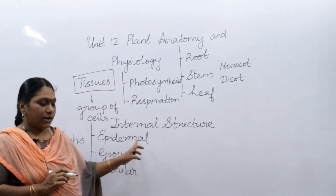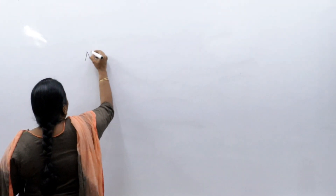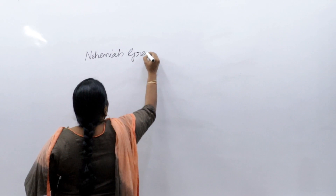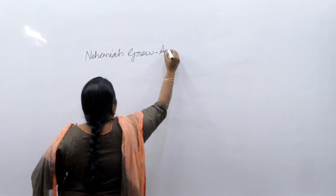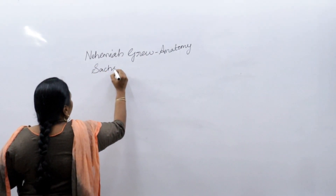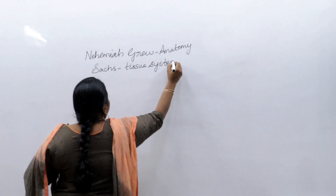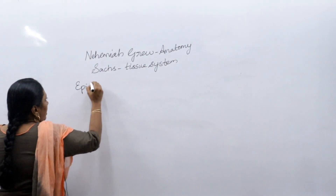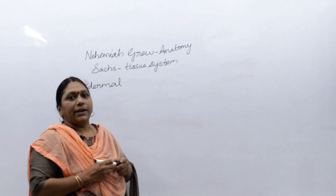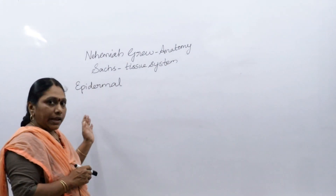We should know about two scientists: Nehemia Grew, who is called the father of plant anatomy, and Sachs, who proposed the three tissue systems in plants. Coming to the first tissue system — the dermal or epidermal tissue system — just like our skin is the outer layer of our body, the outer layer of a root, stem, or leaf is called the epidermis.